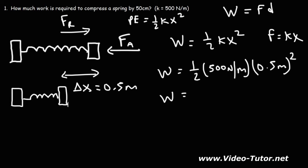0.5 times 500 times 0.50 squared, that's 62.5 joules. So that's how much work is required to compress the spring by 50 centimeters. So this is the formula that you need in order to calculate the answer.